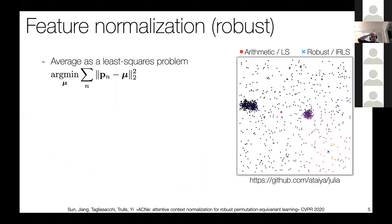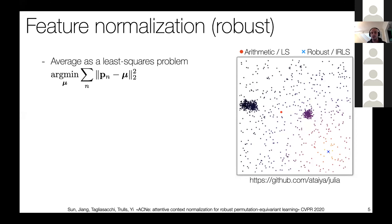I'll start from IRLS to explain the core idea, using the simplest least squares problem: computing the centroid of a set of points — the arithmetic mean used in feature normalization layers. You can write arithmetic mean in least squares form, where mu is the arithmetic mean of points pn. But if your points have many outliers — as shown on the right with three clusters — the solution you get, the red dot, doesn't express the structure of the data. Placing the red point in any of the three clusters would have been a much better idea.